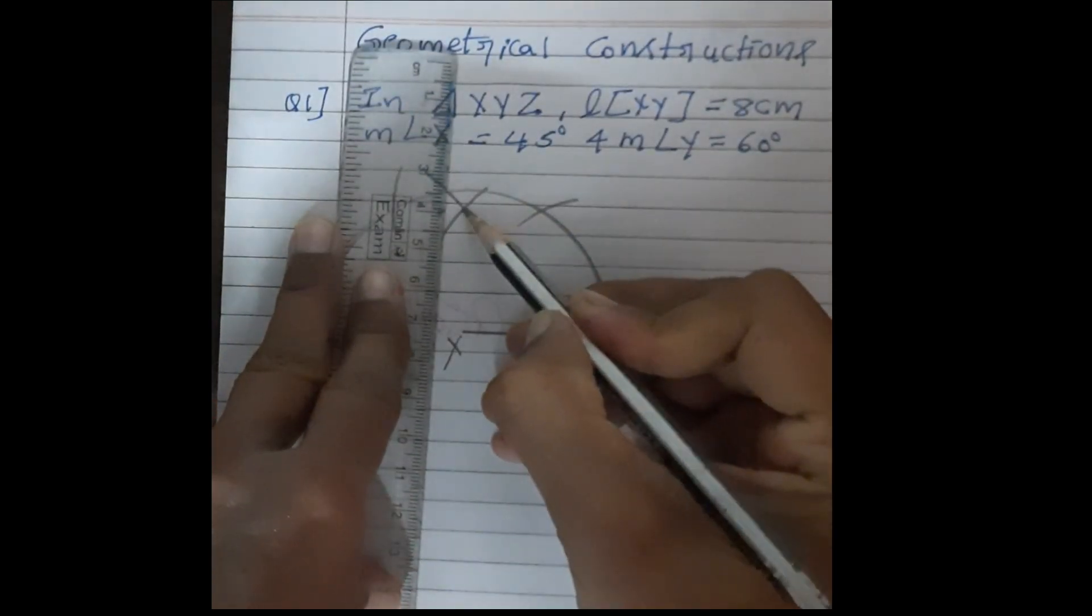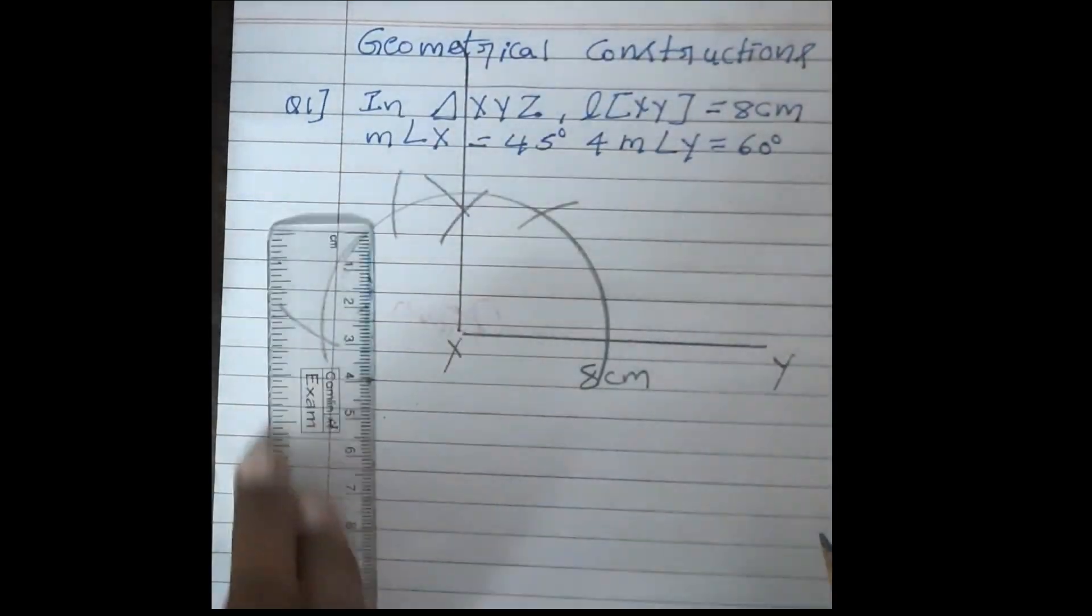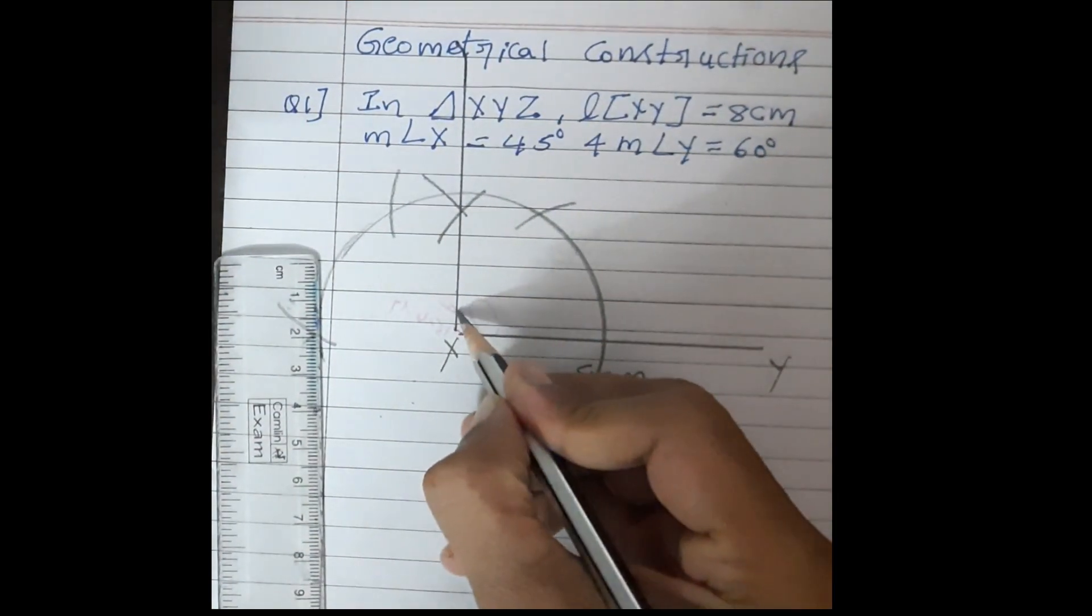So here we got point here, we will draw line over here. So this is what now? 90 degrees.